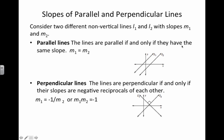If you'll remember from Algebra 1 and geometry, there are some pretty cool relationships between the slopes of parallel and perpendicular lines. We're going to consider two different non-vertical lines, L1 and L2, with slopes M1 and M2. Slope M1 goes with line L1, and slope M2 goes with line L2.